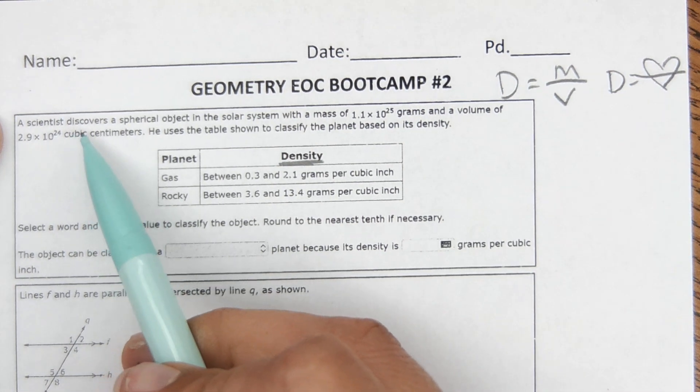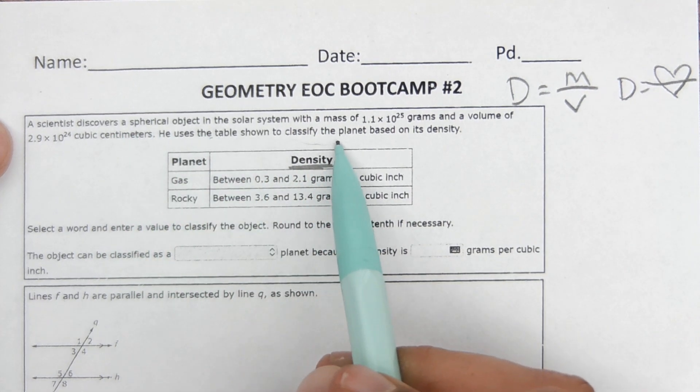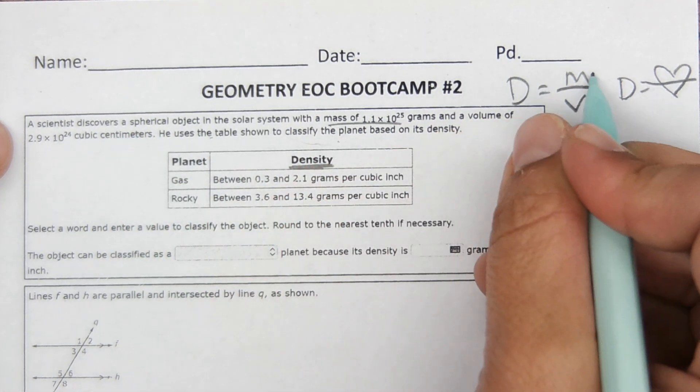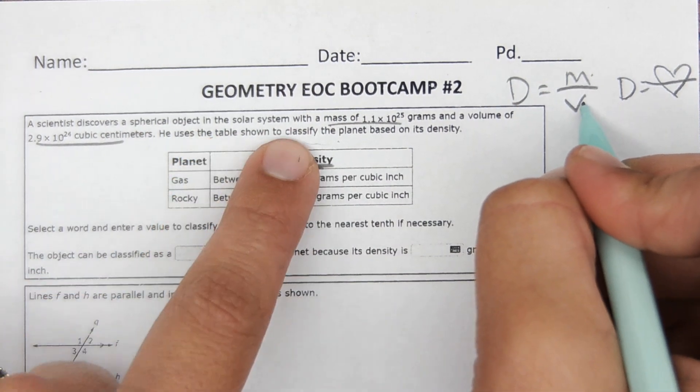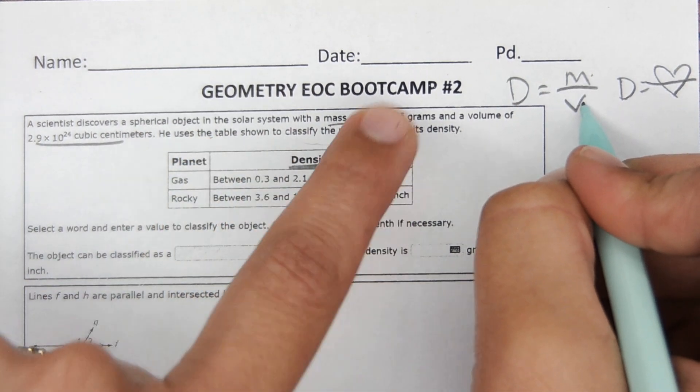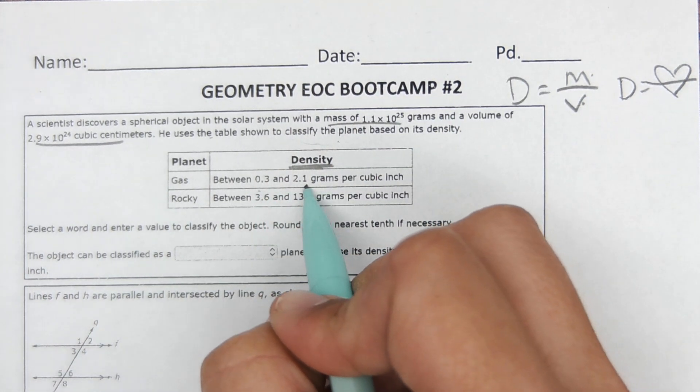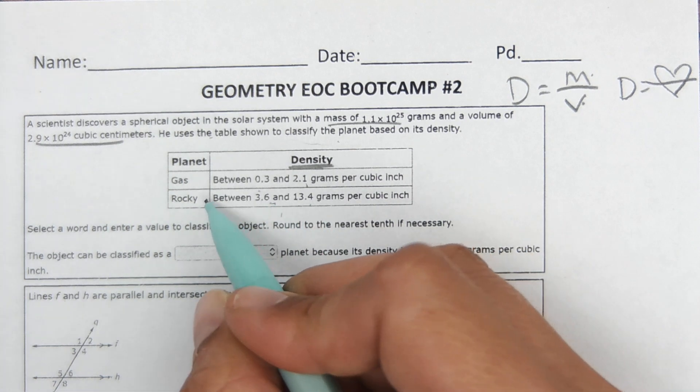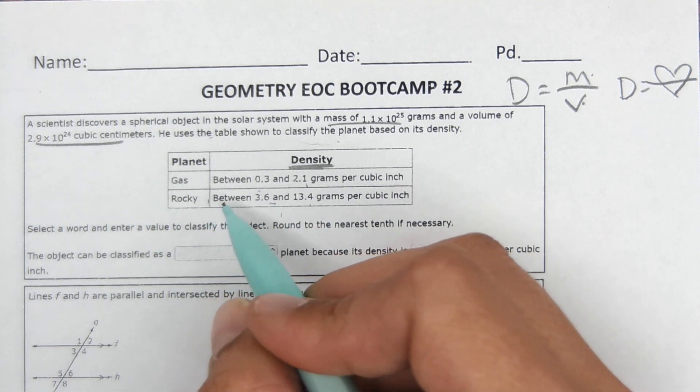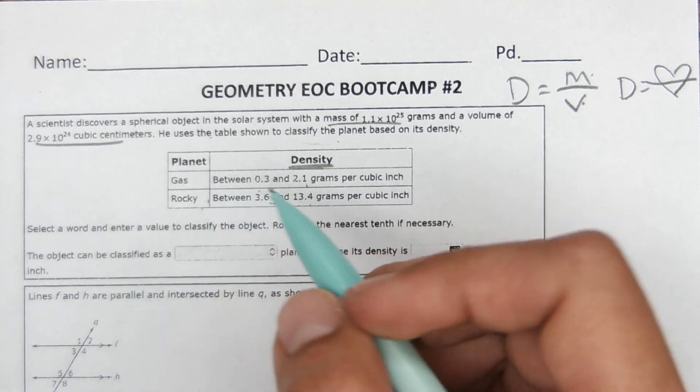So for this, it says a scientist discovers a spherical object in the solar system, a mass of this mass, and a volume of this volume. He uses the table shown to classify the planet based on its density. So if the density is between 0.3 and 2.1, then it is a gas. If the density is between these two numbers, it is rocky. So we are going to determine the density and then determine whether it's gas or rocky.